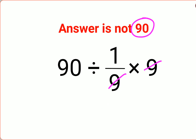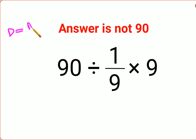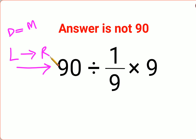The reason for that is because division and multiplication always hold equal precedence. So in sums like these, it is mandatory to go from left to right.